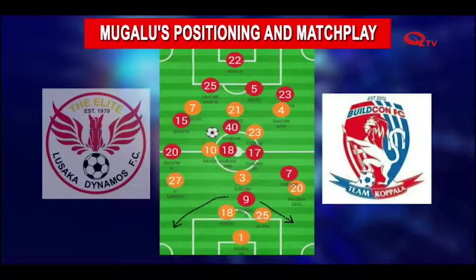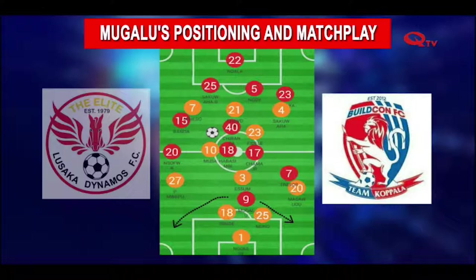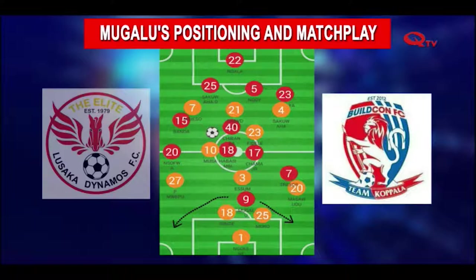Due to popular demand, let's talk about Kope Mungalu's positioning and match play. Here's the assessment: BuildCon's two central defenders, with Esuman the captain in the middle of the pyramid in transition, and Trezo in a 1v1 situation with the right back. Remember, it was 2v1 in the central areas because BuildCon wanted to use that space — and they used it.